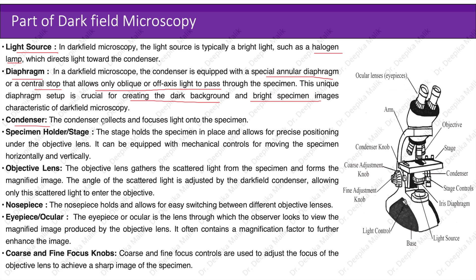Condenser: the condenser collects and focuses light onto the specimen. Specimen holder or stage: the stage holds the specimen in place and allows for precise positioning under the objective lens. It can be equipped with mechanical controls for moving the specimen horizontally and vertically. Objective lens: the objective lens gathers the scattered light from the specimen and forms the magnified image. The angle of scattered light is adjusted by the dark field condenser, allowing only the scattered light to enter the objective.